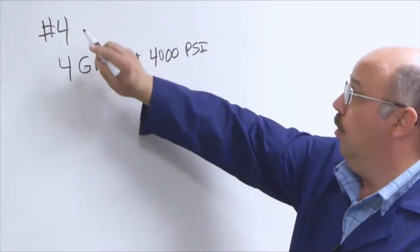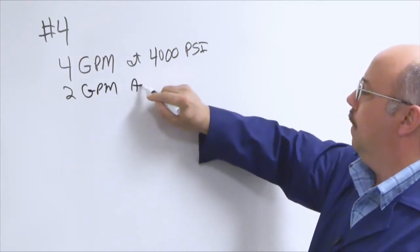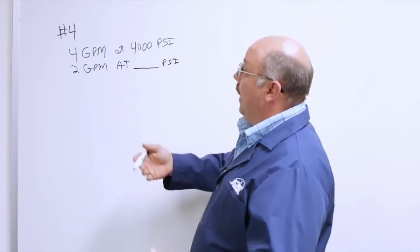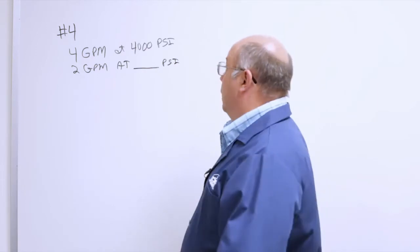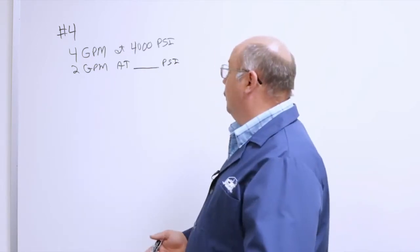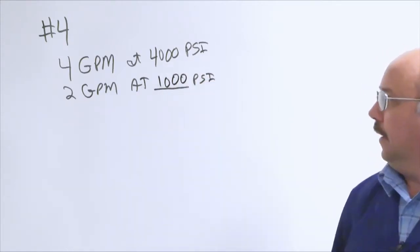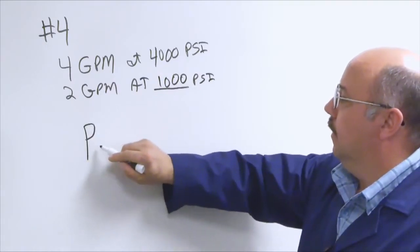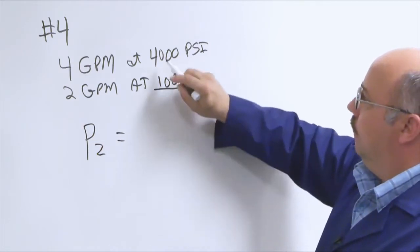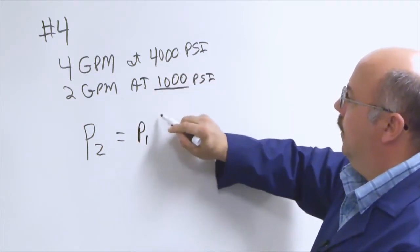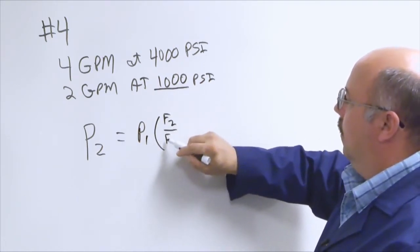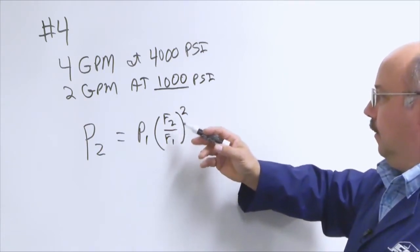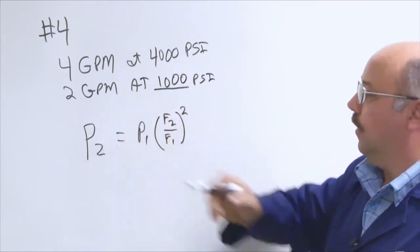If I were to drop the flow on a number four nozzle to two GPM, what pressure would we have? One wants to think it would be 2,000 psi because we got half the flow, we get half the pressure. Well, that's not true because it's a squared function the way water goes through the nozzle and has a pressure drop. The right answer is 1,000 psi. The formula is: P2 equals P1 times the ratio F2 over F1, and then this is squared. If we throw the numbers in, we get 4 over 2, which is 2. Square that, we get 4. 4 times 1,000 is 4,000. So the formula works out, and we can use this to calculate what flow we need in a system.